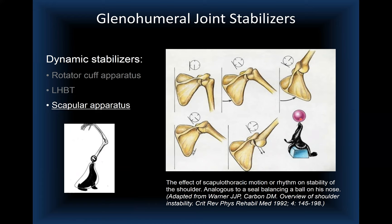The glenoid moves like a seal's nose, remaining in the right spot to control and balance the humeral head. Normal scapulothoracic motion allows the scapula to rotate upward so the glenoid socket always remains underneath the humeral head, similar to how a seal moves its nose to keep the ball balanced.